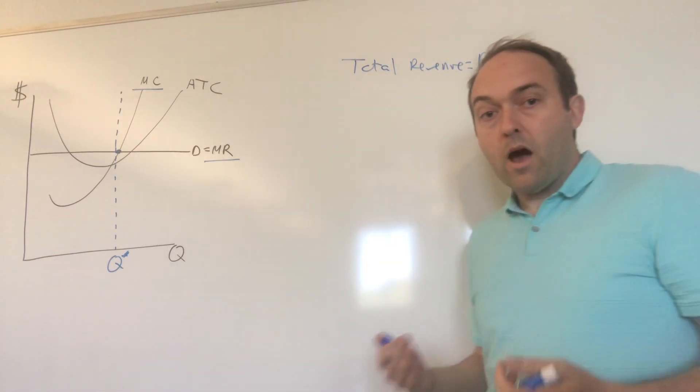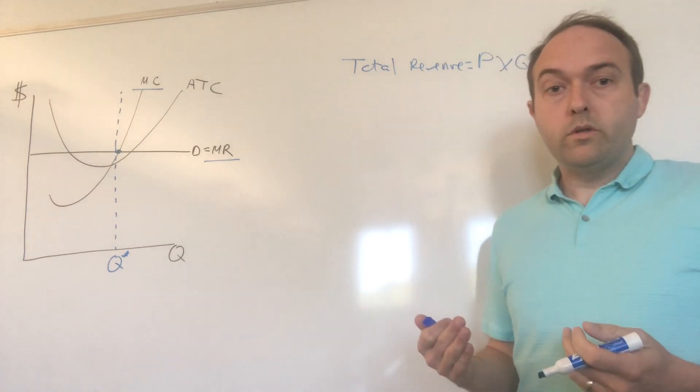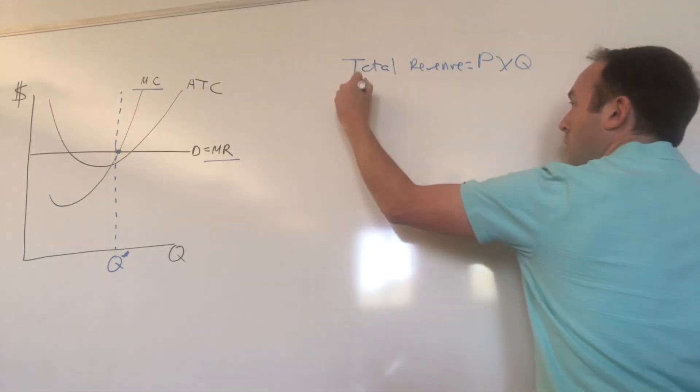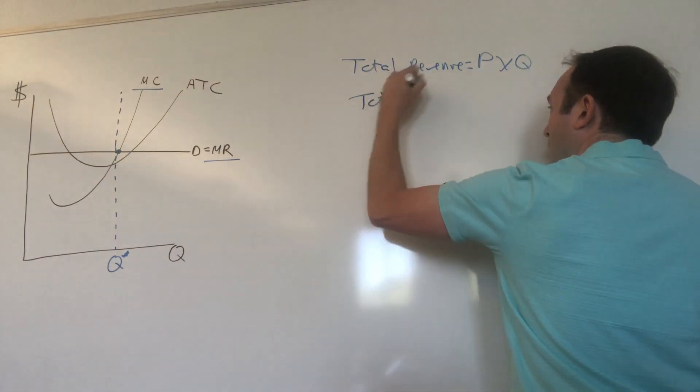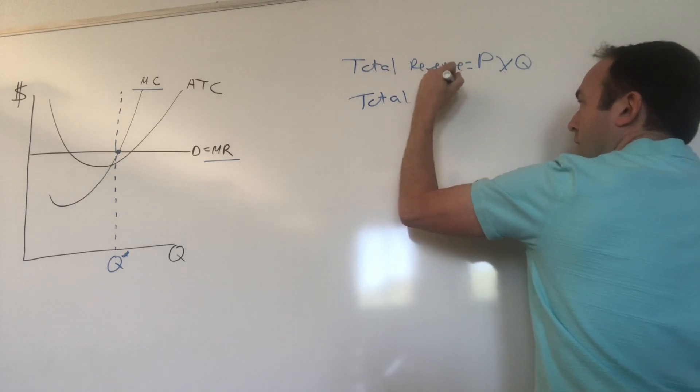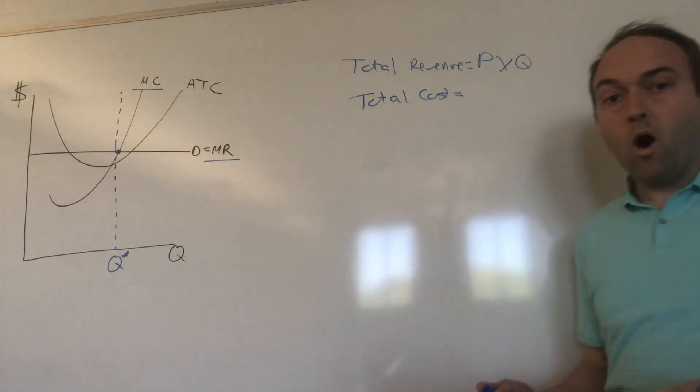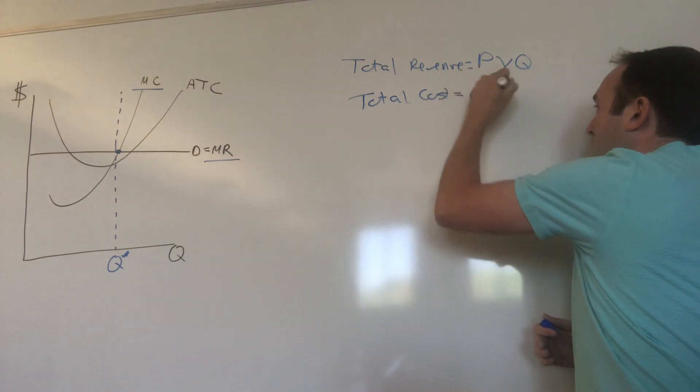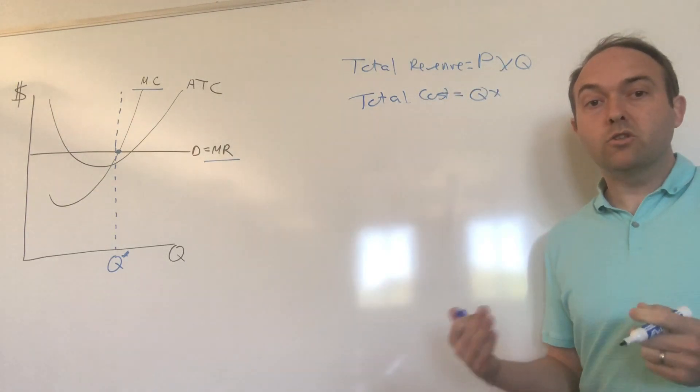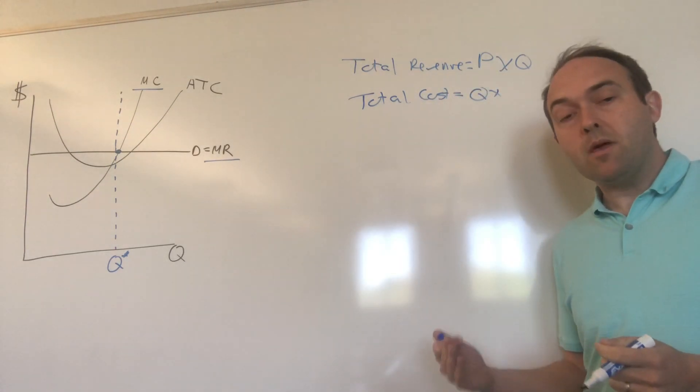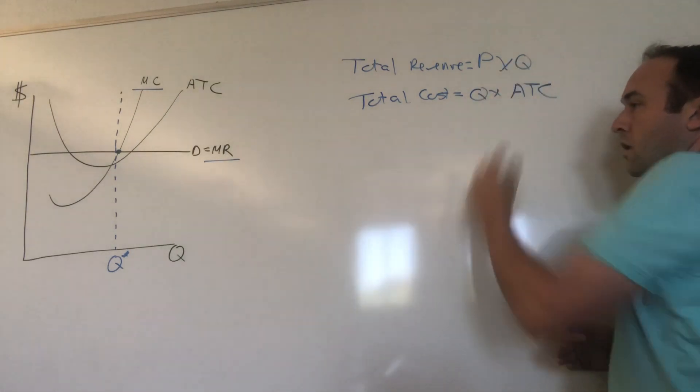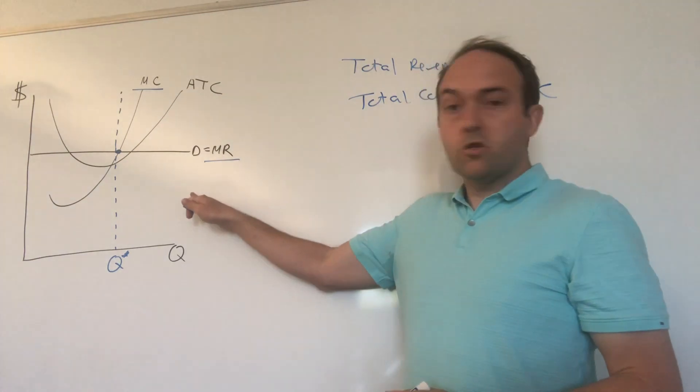The second outcome we want to look at is going to be what is the total cost of production. Total cost equals the quantity that they make and sell, which we already know, times the average cost per unit if they make that many units. We're going to call ATC.